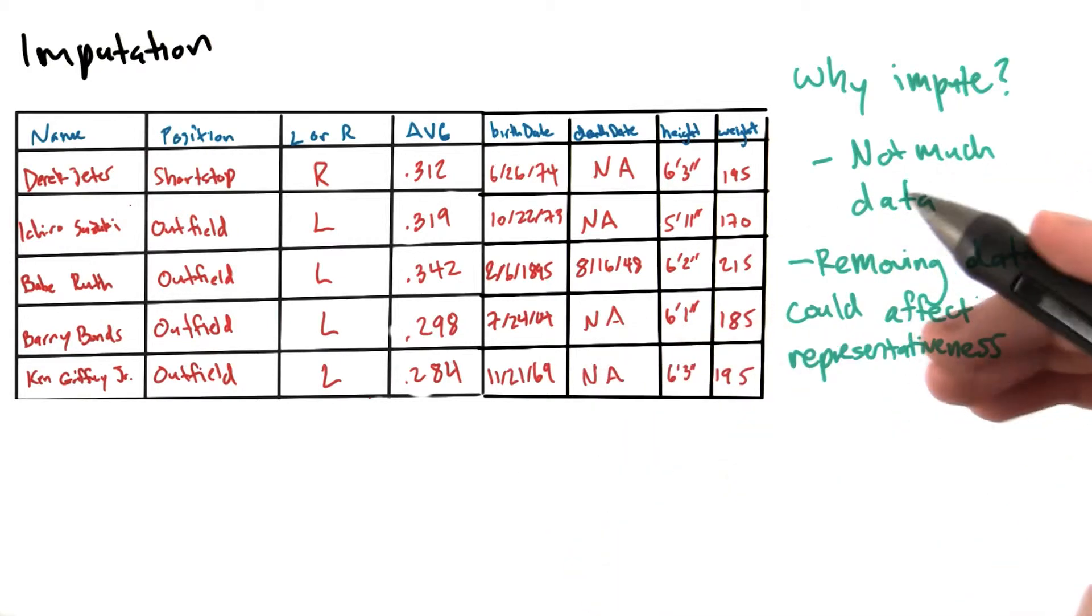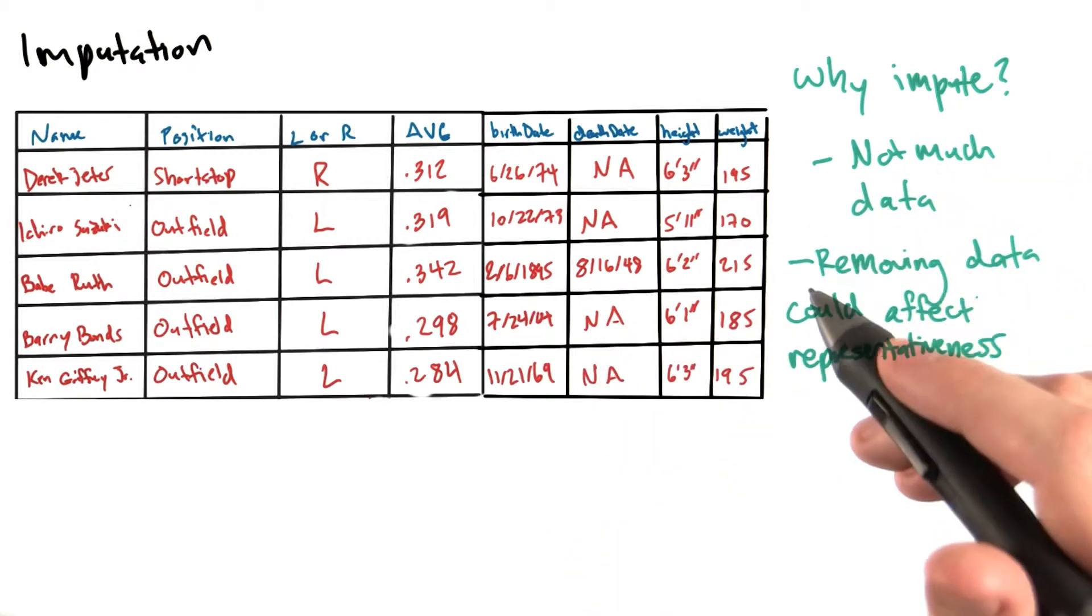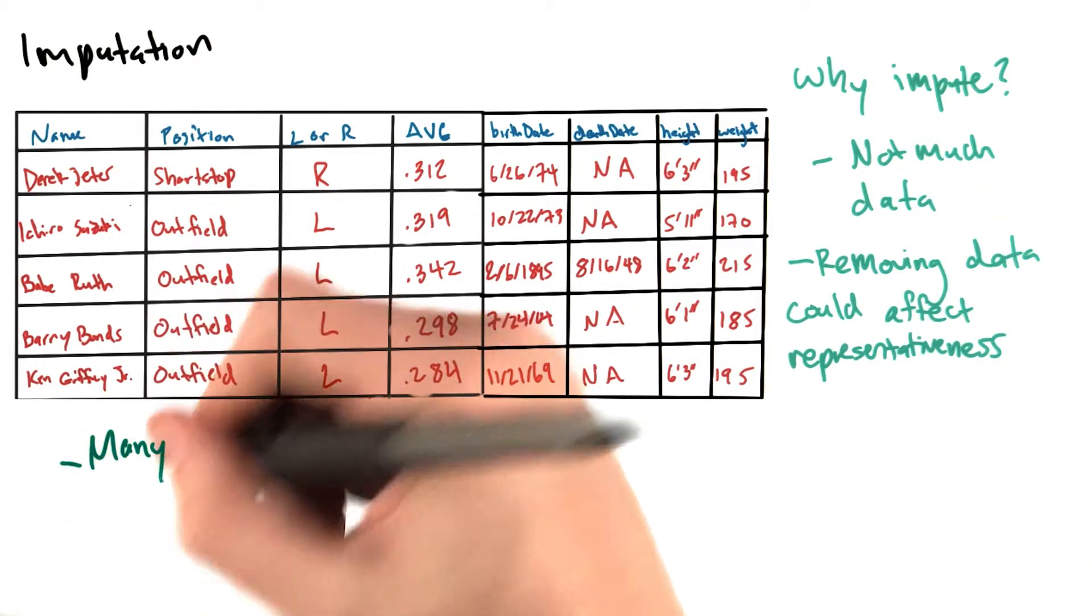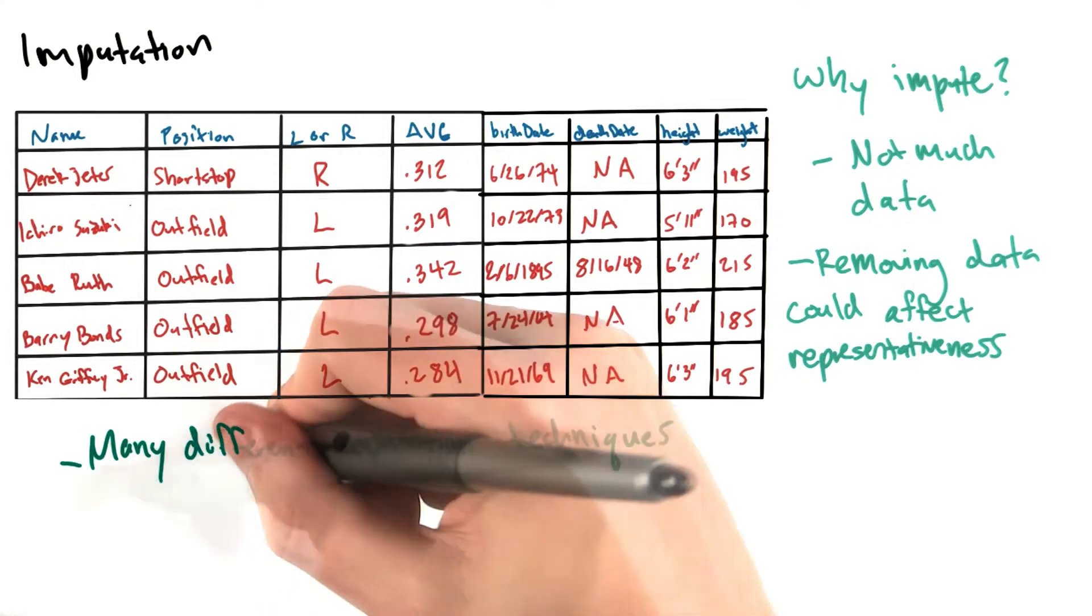There are many different ways to impute missing values, and different techniques are constantly being developed. I want to quickly discuss some relatively simple ways to impute missing values in our data.